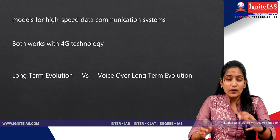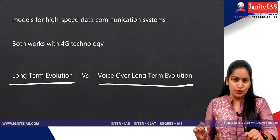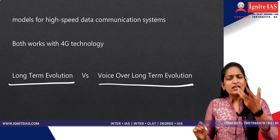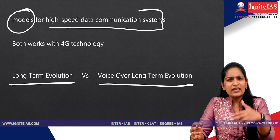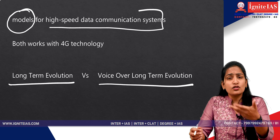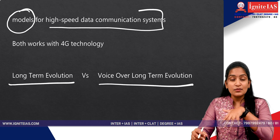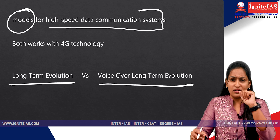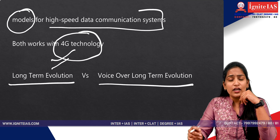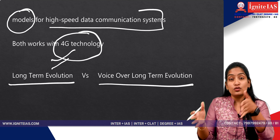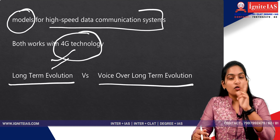What are these two things? First, the abbreviations: LTE stands for Long-Term Evolution and VoLTE stands for Voice over Long-Term Evolution. These are models for high-speed data communication systems. We already got habituated to using data services or mobile data on our phones. So a model in order to use high-speed data communication systems comes under these two categories. Both work under 4G technology. We know that data services have passed through generations from 1G, and it's now going towards 6G. These two technologies presently work on 4G technology.